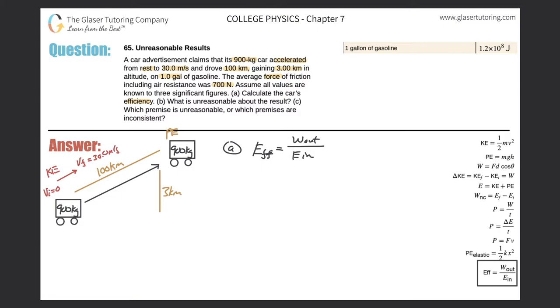Also, there was a force of friction. The average force was 700 newtons. And we are to assume that was the average force over this entire distance that the car drove. And it said that the car drove 100 kilometers.